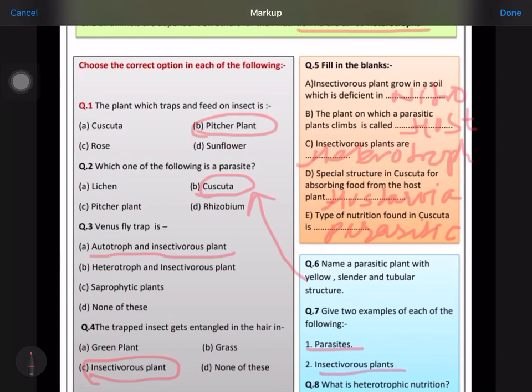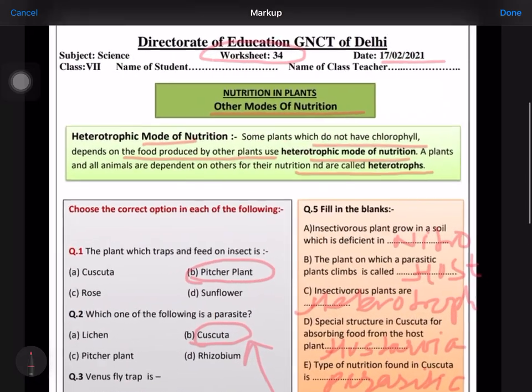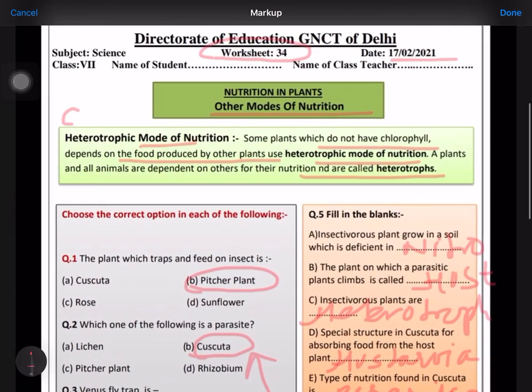Insectivorous plant, you can write Venus fly trap and pitcher plant. What is heterotrophic nutrition? You can write from here, answer number eight. Thanks!